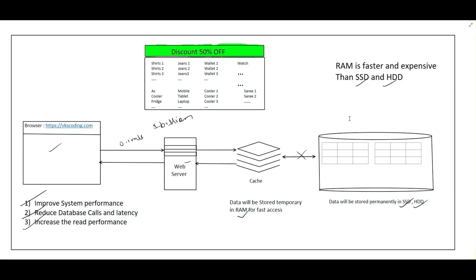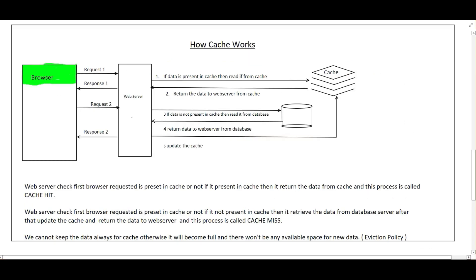Now let's see how caching works. Here we have a browser, a web server, a database, and a cache — all components are in place. When a request comes from the browser, the web server receives it and first checks whether the requested data is present in the cache. If the requested data is present in the cache, it returns that data from the cache to the web server — this is called a cache hit. Data being present in the cache and returned without a database call is called a cache hit.